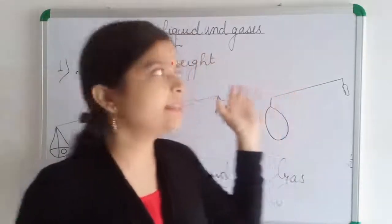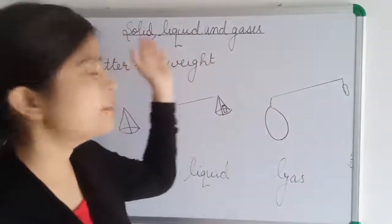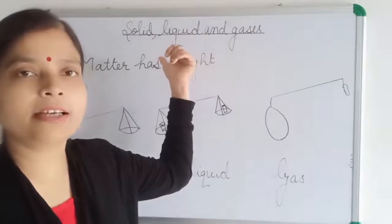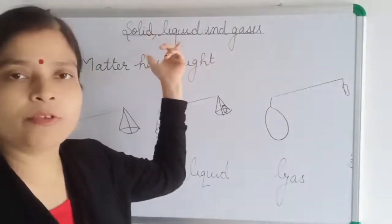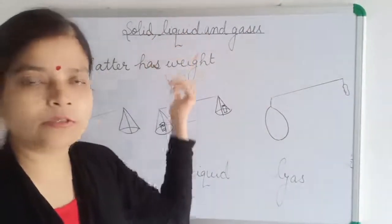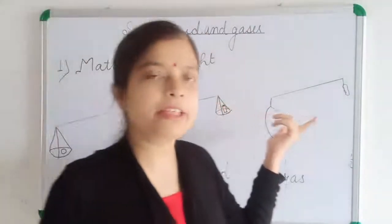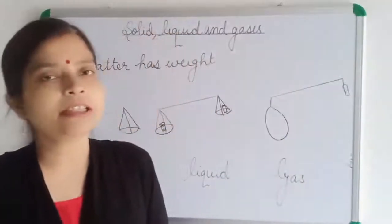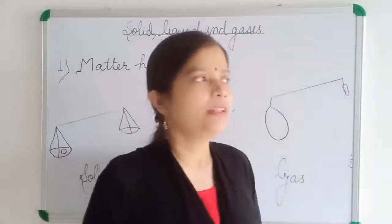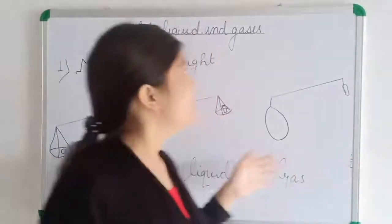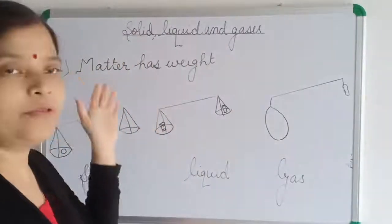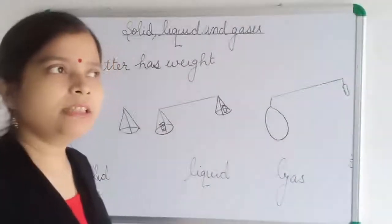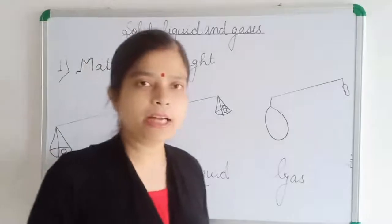Water can exist in all three forms. The solid form of water is ice. The liquid form of water is the water we are drinking, and the gaseous form of water is water vapor or steam. So these are the different forms of water, which means water is the same matter in different states.